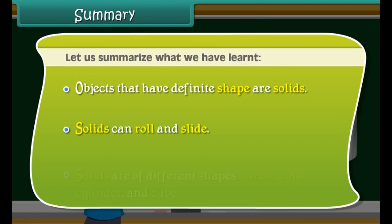Let us summarize what we have learnt. Objects that have definite shape are solids. Solids can roll and slide. Solids are of different shapes: sphere, cone, cylinder, and cube.